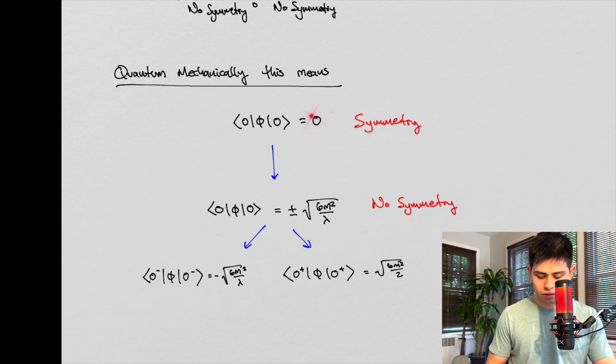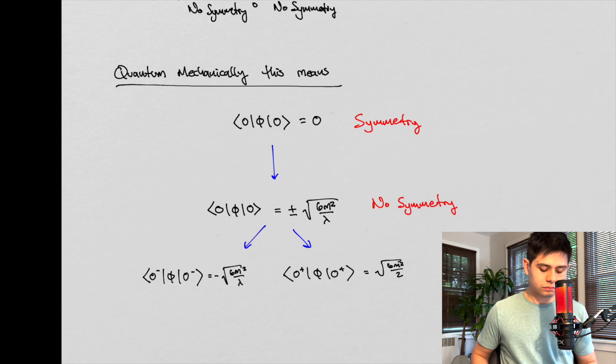So we have one ground state that in which our potential defines zero. Now we have two ground states. This could be sort of thought of as, again, two ground states here. So quantum mechanically, this no symmetry actually means there's two ground states to our system, which is quite interesting to think about.